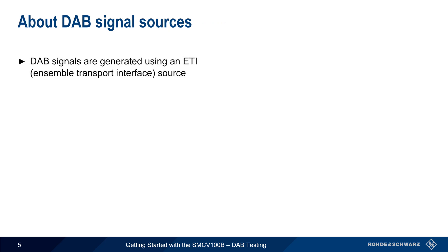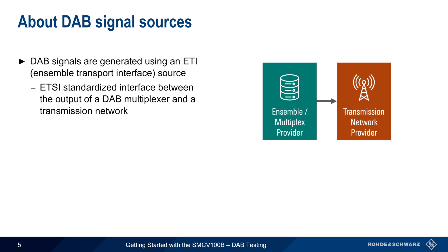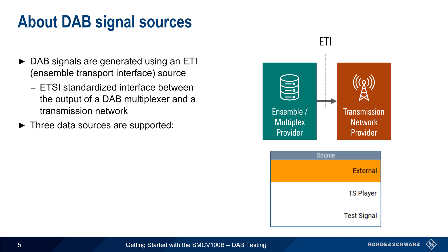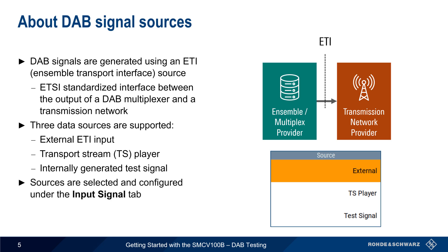On the SMCV, DAB signals are generated using the information encoded in the ETI, or Ensemble Transport Interface format. This is an ETSI standardized interface between the output of a DAB multiplexer and a transmission network provider. The SMCV supports three different data sources: an external ETI input signal, playback of a file containing ETI data, and an internally generated test signal. These sources are selected and configured under the Input Signal tab.